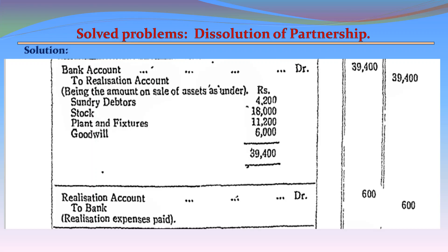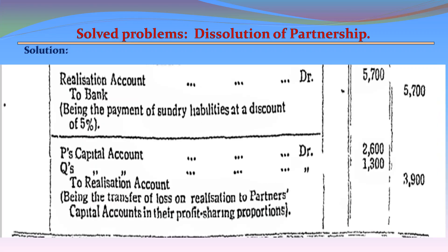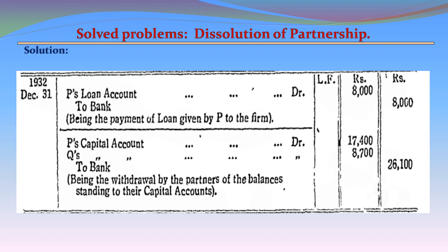Entry 4: Realization Account Dr. 600 — To Bank 600. Being realization expenses paid. Entry 5: Realization Account Dr. 5,700 — To Bank 5,700. Being the payment of Sundry Creditors at a discount of 5% (i.e., 6,000 less 5% = 5,700).